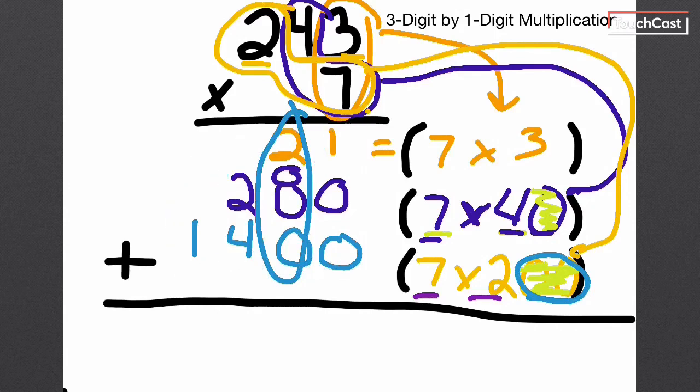So now, let's solve. Zero, zero, and one gives me one. Eight and two in my tens place gives me ten. So I drop the zero, carry the one.